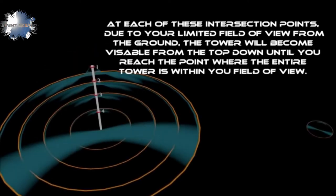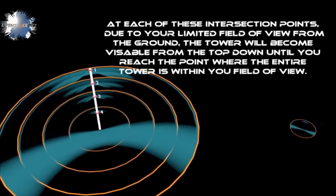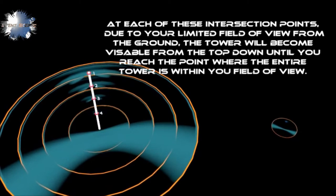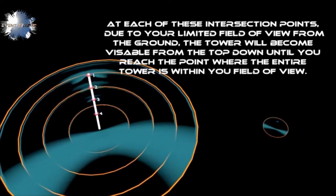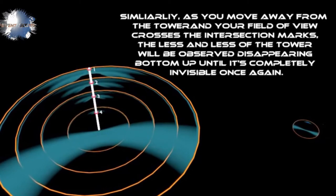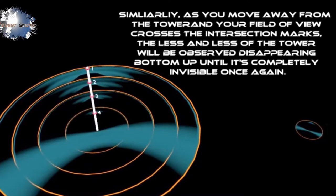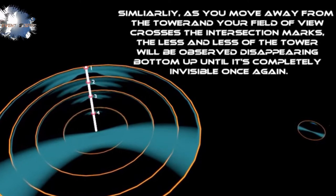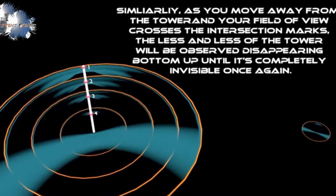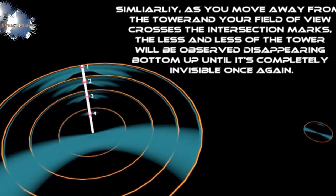At each of these intersection points, due to your limited field of view from the ground, the tower will become visible from the top down until you reach the point where the entire tower is within your field of view. Similarly, as you move away from the tower and your field of view crosses the intersection marks, less and less of the tower will be observed disappearing from the bottom up until it's completely invisible once again.